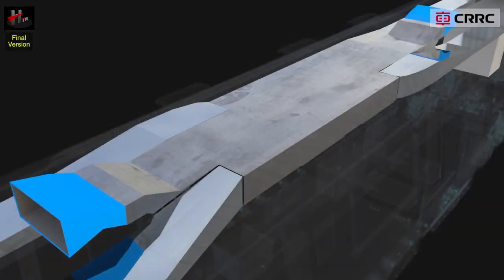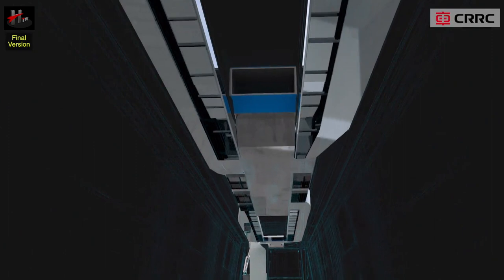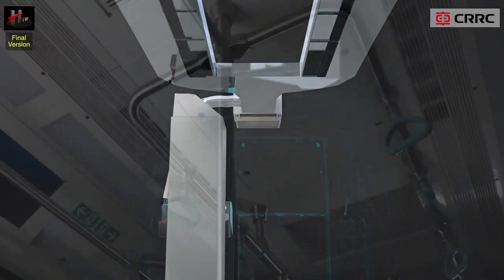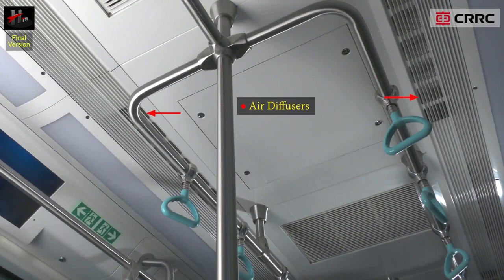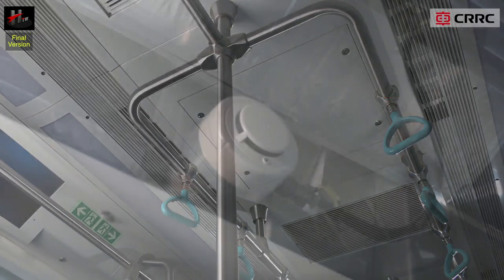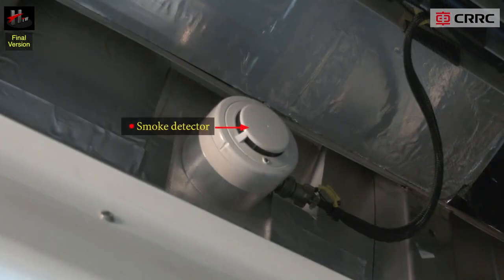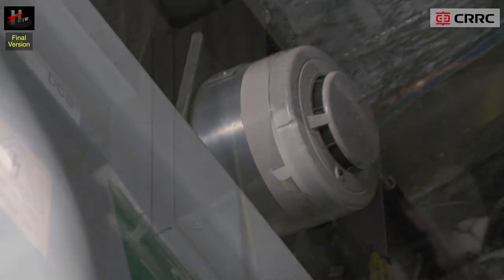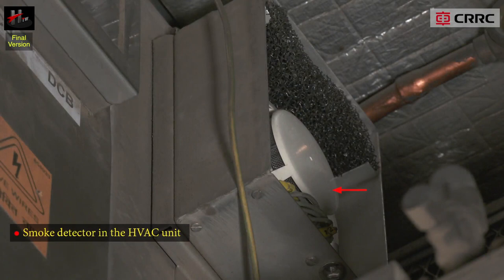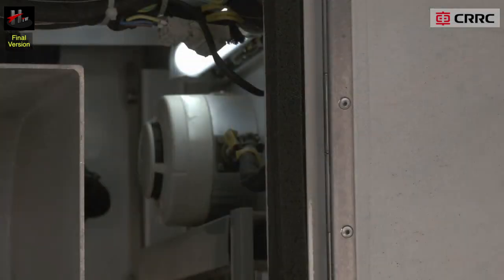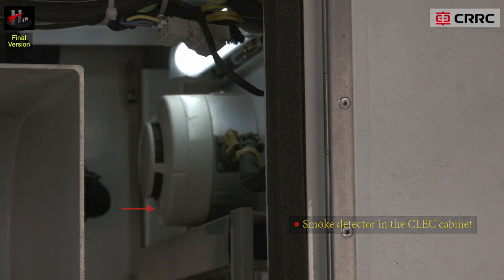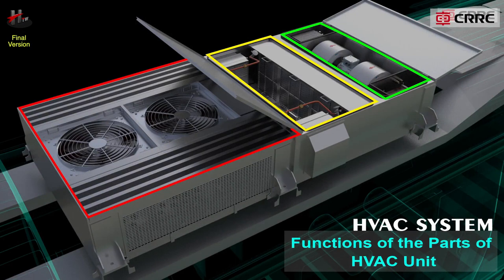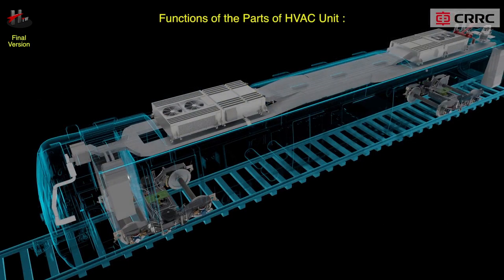The parts related to HVAC in the saloon car are: the supply air ducts, air diffusers, and the smoke detectors. The functions of the parts are as follows.